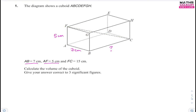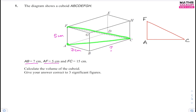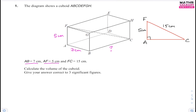Let's draw that triangle out. So we have F, A, and C. I've drawn out this right-angle triangle. We are told that F to C is 15 centimetres, and FA is 5 centimetres. This is our right angle.